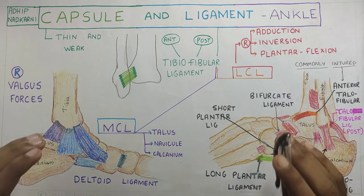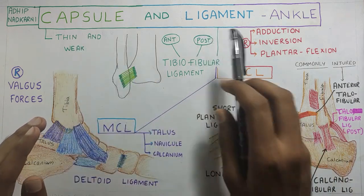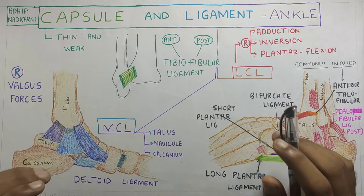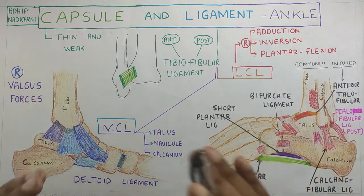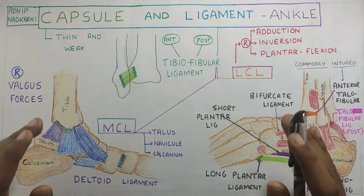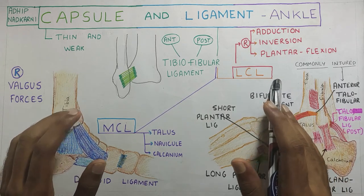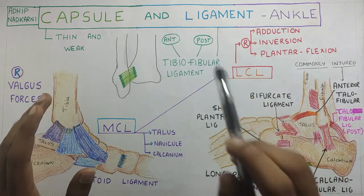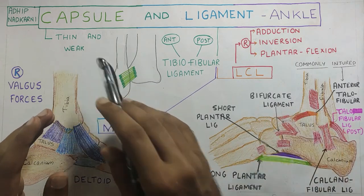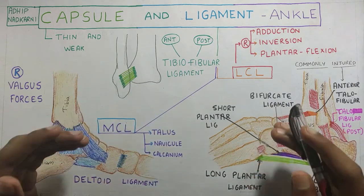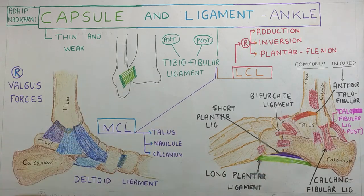In this video, we are going to talk about the capsule and the ligament of the ankle joint, and then we will move on to the other lateral structures which provide stability to the ankle joint. To begin with, stability is mostly provided by the ligament. The capsule is not that efficient in providing stability because it's very thin and weak.